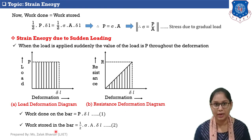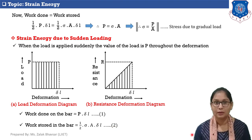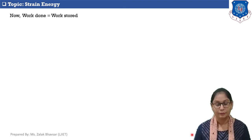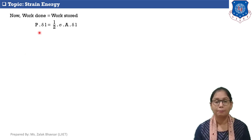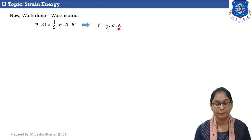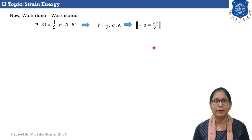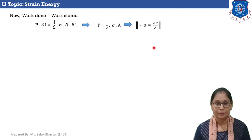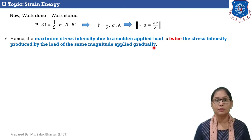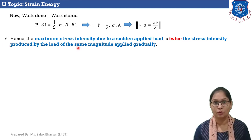From the resistance versus deformation diagram, work stored in the bar equals one half into sigma into A into delta L — equation number 2. Since work done equals work stored: P into delta L equals one half into sigma into A into delta L. Therefore sigma equals 2P by A. So the maximum stress intensity due to a suddenly applied load is twice the stress intensity produced by the same load applied gradually.